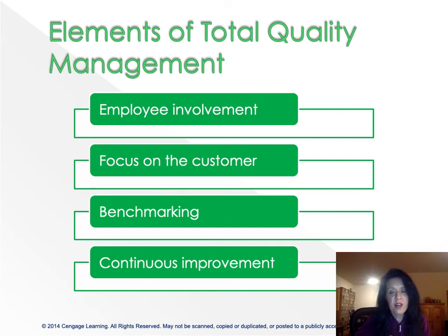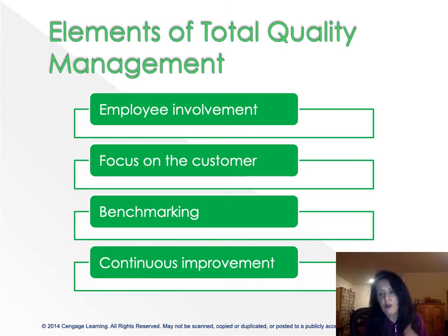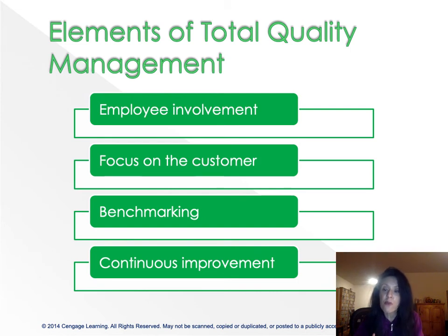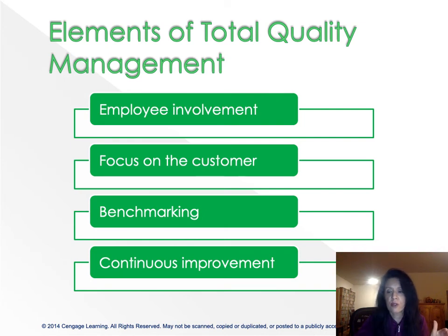Japan emphasized employee involvement in the prevention of quality problems. There are four significant elements in the total quality management approach. The first is employee involvement — this is all about company-wide participation in quality control. Especially frontline workers are intimately involved in the process of total quality management.